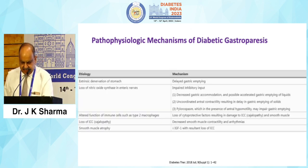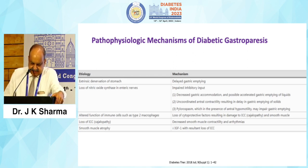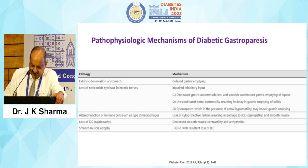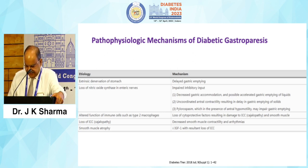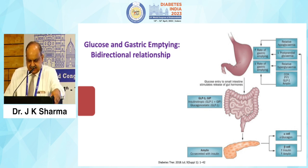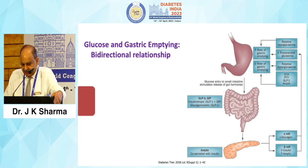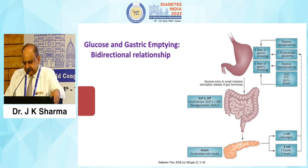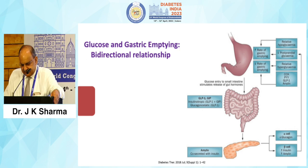The pathophysiological mechanism of diabetic gastroparesis: extrinsic denervation of the stomach leads to delayed gastric emptying; loss of nitric oxide synthetase in the enteric nerves leads to impaired inhibitory inputs; altered function of immune cells such as type 2 macrophages results in loss of cytokine factors causing damage; and there is loss of the ICC — casulopathy — and smooth muscle atrophy. Glucose and gastric emptying have a bidirectional relationship: increased gastric emptying rate is associated with relative hypoglycemia, decreased rate with relative hyperglycemia, and glucose entry into the small intestine stimulates release of gut hormones.